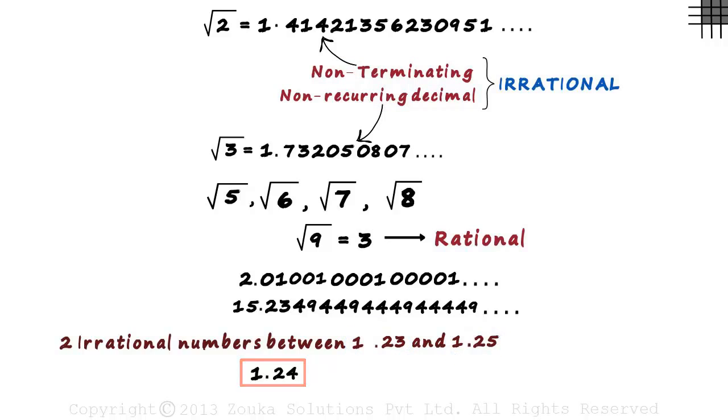After 1.24, we can start writing 01, 001, 0001 and so on. That's one irrational number between these two numbers.